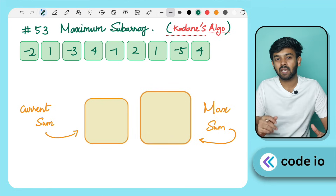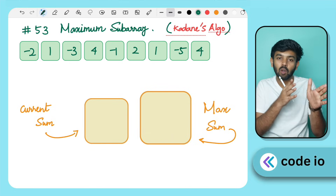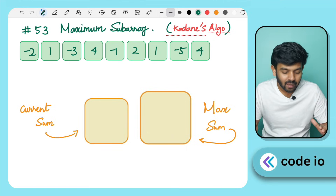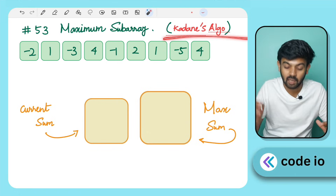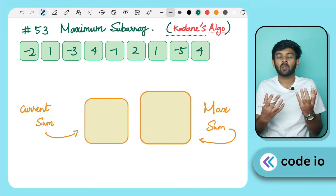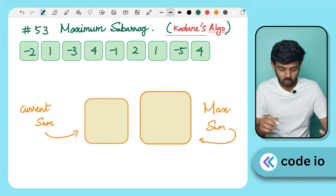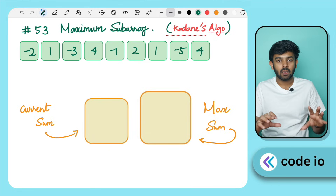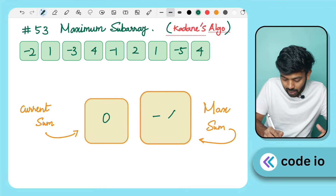If we want to optimize, we can use dynamic programming — a very elegant and easy approach. We have two variables: CurrentSum and MaxSum. We assign CurrentSum an initial value of zero, and MaxSum an initial value of minus infinity.